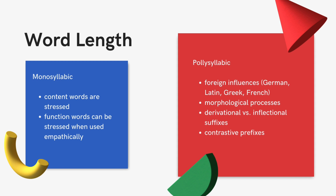Now, waters can get a bit muddied in English, as with anything else. Content words can become unaccented in context if they contain previously mentioned or given information, and function words can become accented when they are used emphatically or contrastively. With polysyllabic words, the situation becomes far more difficult, especially because the stress patterns of different languages have influenced English vocabulary. As a very general rule, Germanic words tend to have their stress on the first syllable, whereas Latin, Greek, or French words usually have it further towards the end. However, morphological processes and factors do have a considerable effect on stress placement.